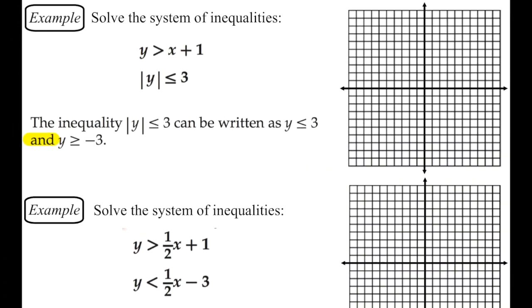So here's another example for you. It says to solve the system, and we have y is greater than x plus 1, and then the absolute value of y is less than or equal to 3. Now this one I wanted to do with you simply because this absolute value of y is different than what we've looked at before with absolute values.